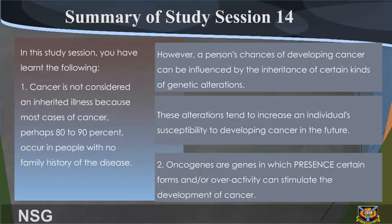Summary. In this study session, you have learnt the following: 1. Cancer is not considered an inherited illness because most cases of cancer, perhaps 80–90%, occur in people with no family history of the disease. However, a person's chances of developing cancer can be influenced by the inheritance of certain kinds of genetic alterations. 2. These alterations tend to increase an individual's susceptibility to developing cancer in the future. Oncogenes are genes in which certain forms and/or overactivity can stimulate the development of cancer.